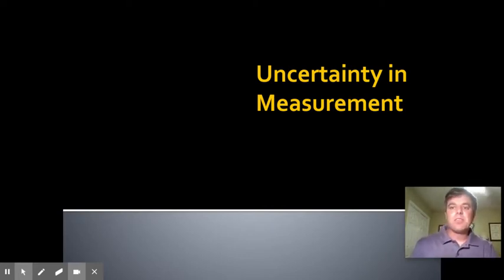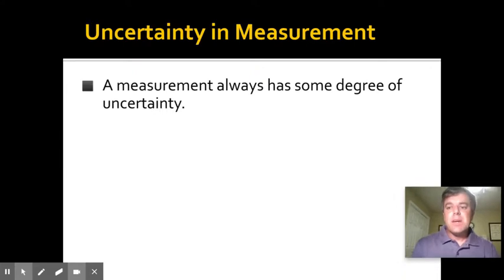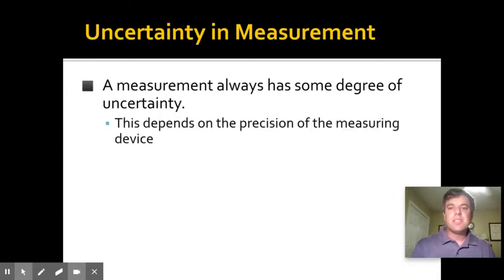As far as measurement, any measurement that you make has some amount of uncertainty depending on the precision of the measuring device. For instance, a bathroom scale will typically read to the nearest pound or maybe to the nearest tenth of a pound, or if you have it in kilograms it may read to the nearest tenth of a kilogram.